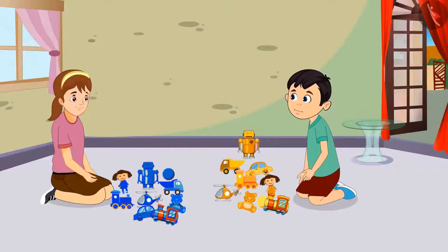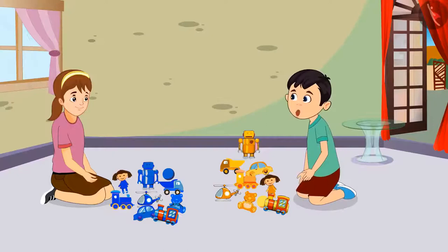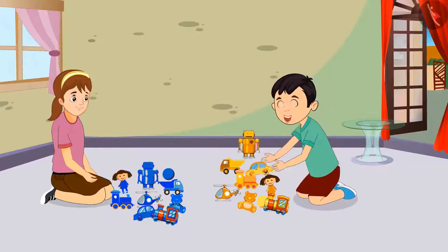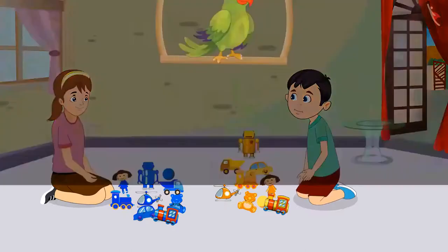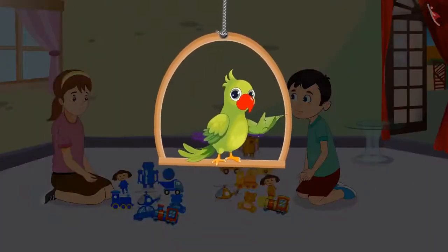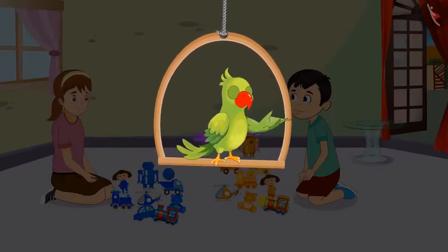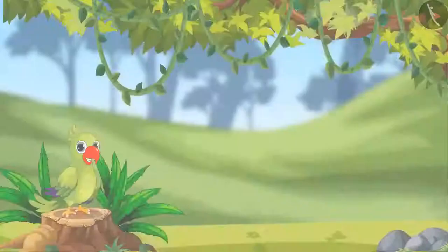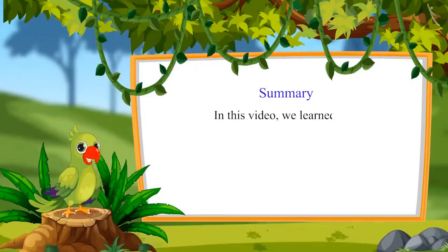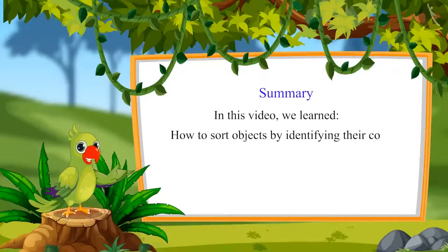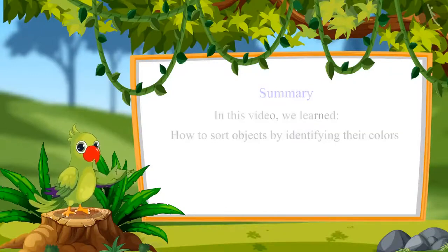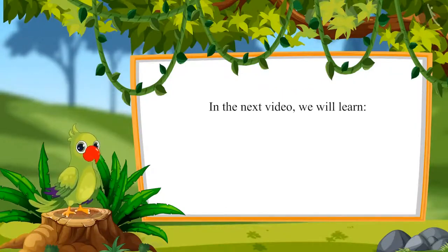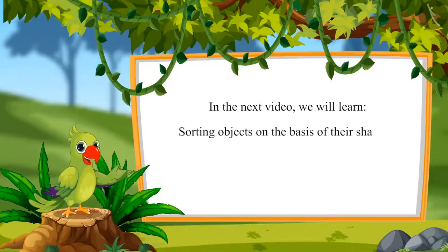After sorting their toys, Chotu said: Aarti, it was so quick — we could identify the colors of our toys and could easily separate them. So children, did you see how to identify the colors of objects and sort them accordingly? In this video, we learned how to sort objects by identifying their colors. In the next video, we will learn sorting objects on the basis of shape. Till then, bye children.